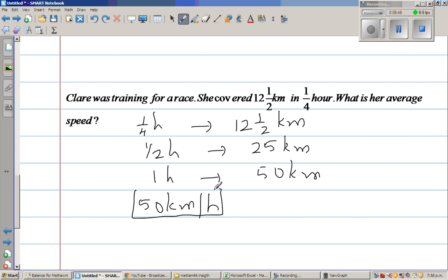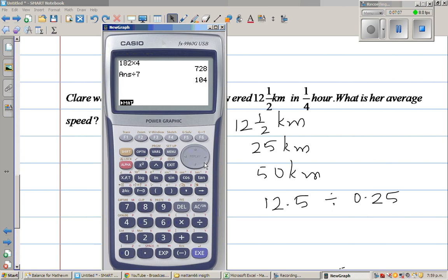Now, if you don't want to do like this, this is same as 12.5 divided by 0.25. You should know how to do both the ways. So it's 12.5 divided by 0.25, which is 50.